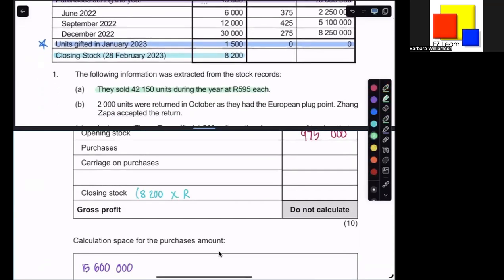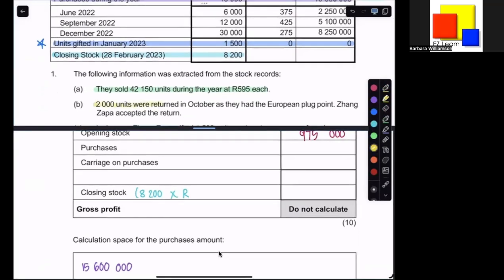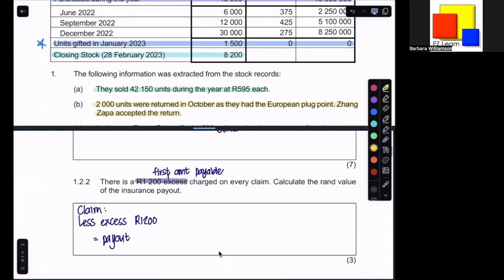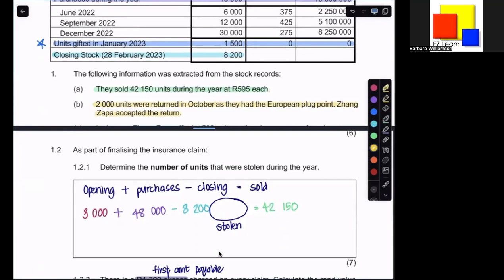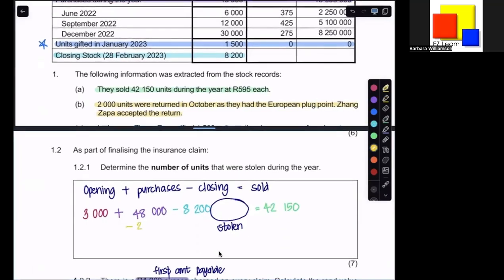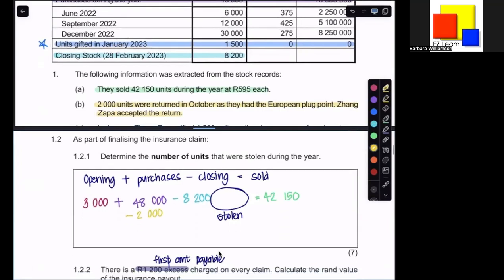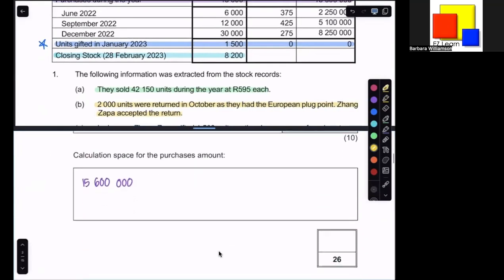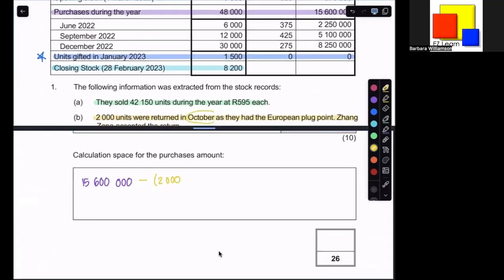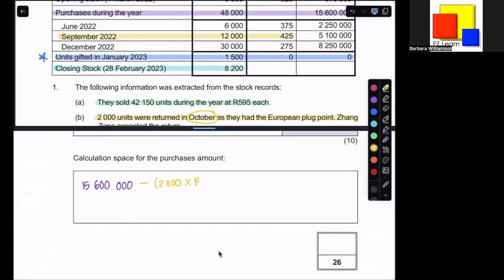Information B, 2,000 units were returned in October as they had the European plug points, and obviously, that means we can't use them in South Africa because they're not going to fit our plugs. So Zhang Zappa accepted the return. That means that over here, we also have a return that we would subtract from the purchases minus 2,000 units. So that'll be part of that calculation. It also means that for my purchases, I'm going to have to say minus 2,000 units. Now, if they were returned in October, it means they must have come from September. So it must have been part of those that we returned. And so, therefore, those are the value that we're going to use, 425.